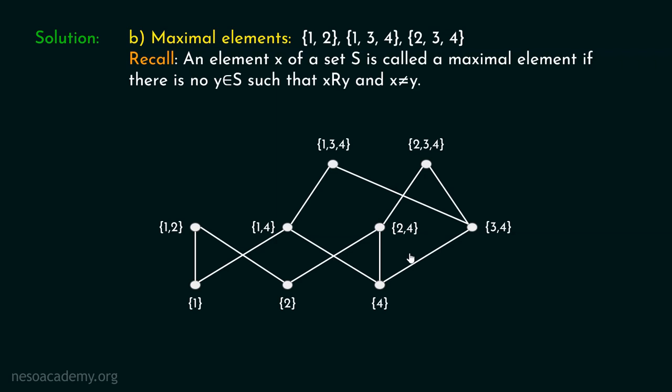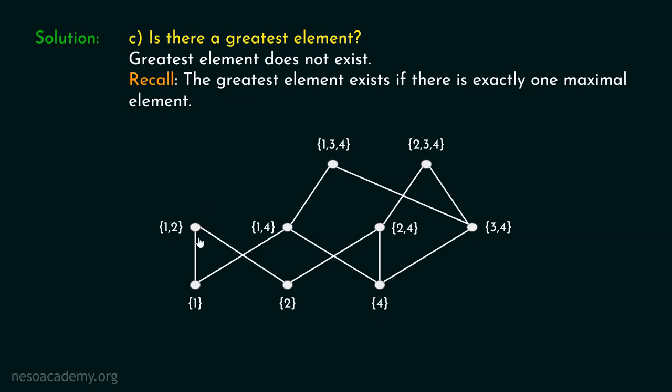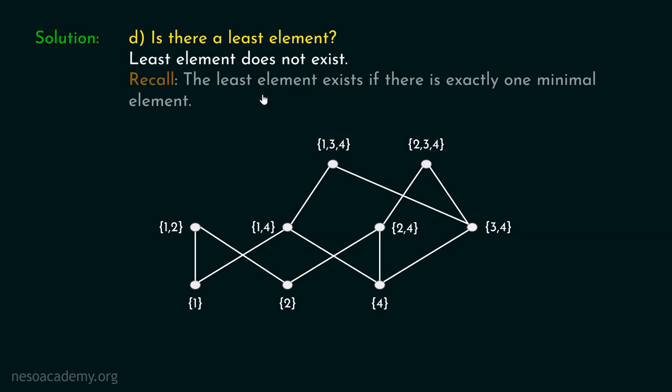Now we will try to find whether there is a greatest element. Obviously not — the greatest element does not exist. The greatest element exists only if there is exactly one maximal element, but we have three different maximal elements. Therefore, the greatest element does not exist. Similarly, the least element does not exist, because it requires exactly one minimal element, and we have three minimal elements.